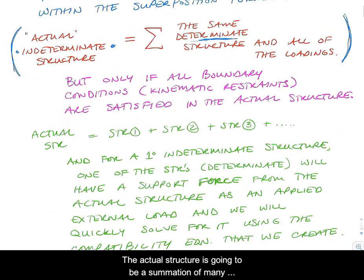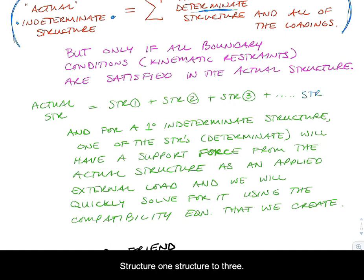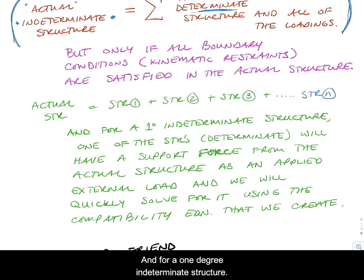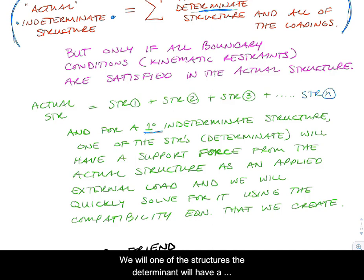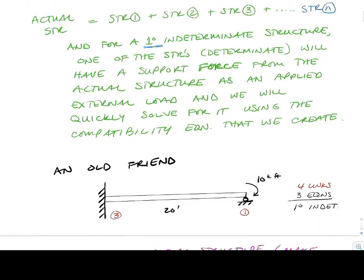The actual structure is a summation of many other structures: structure 1, structure 2, 3, all the way up to some n number. For a 1-degree indeterminate structure, one of the determinate structures will have a support force from the actual structure as an applied external load. We'll be able to quickly solve for that load using the compatibility equation.